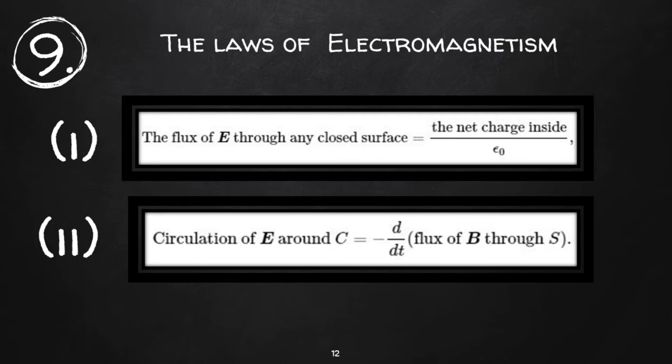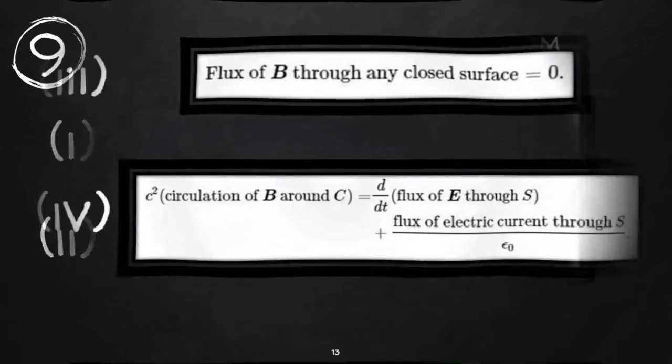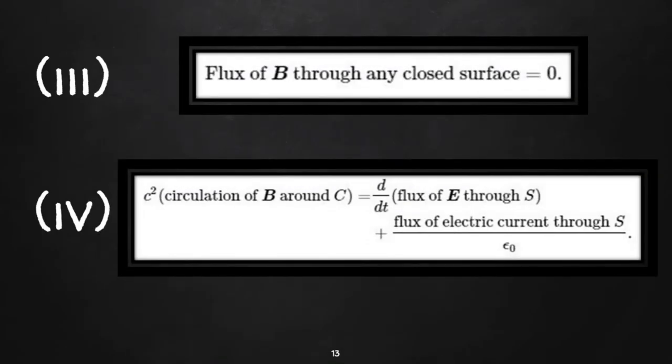The third law states that the flux of B through any closed surface is zero. The fourth law, discovered by Maxwell, states that a changing electric field can produce a magnetic field. These are the four laws of electromagnetism.